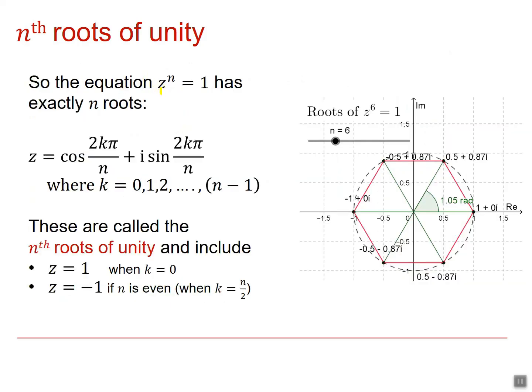So the equation z to the n equals 1 has exactly n roots. They're all of this form, cos of 2k pi by n plus i sine 2k pi by n, where k is an integer between 0 and n minus 1. In fact, if k is larger than n minus 1, for instance, if it was n, then if you think about this here, it will become 2n pi over n or just 2 pi. And so you'll start to get a repetition of each of the roots.